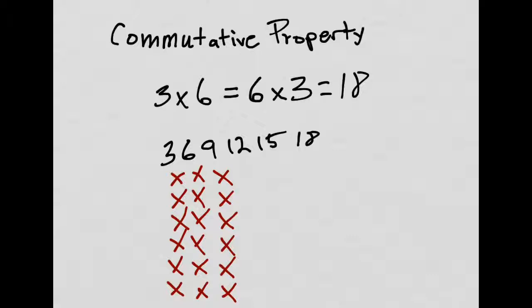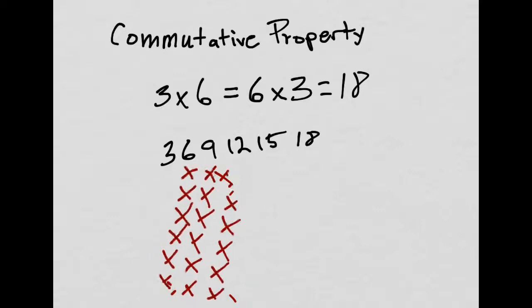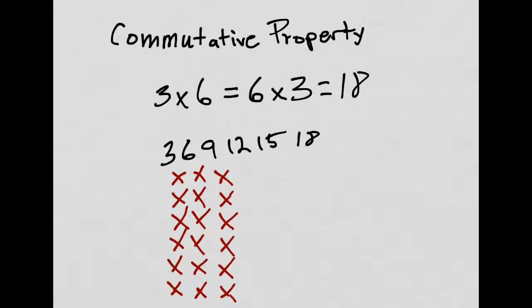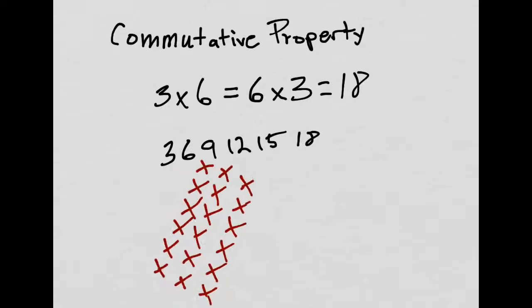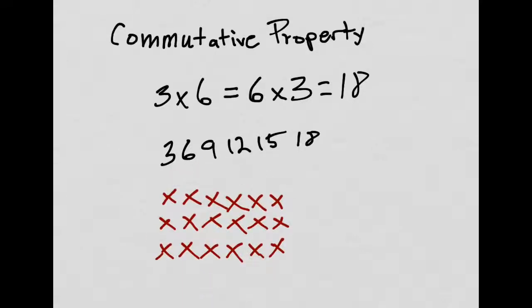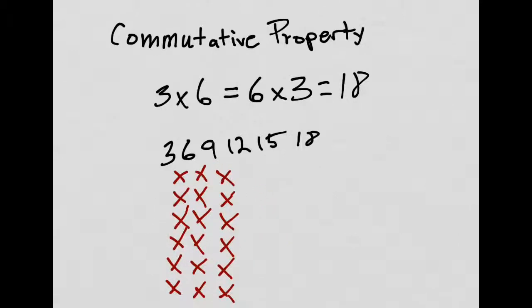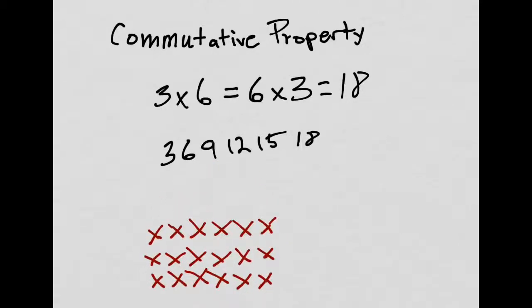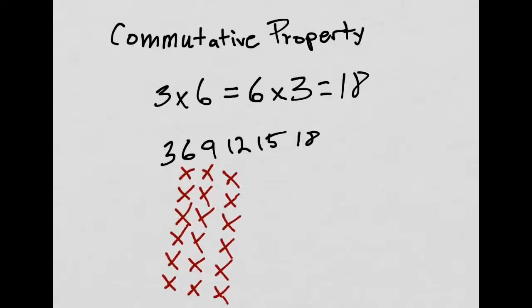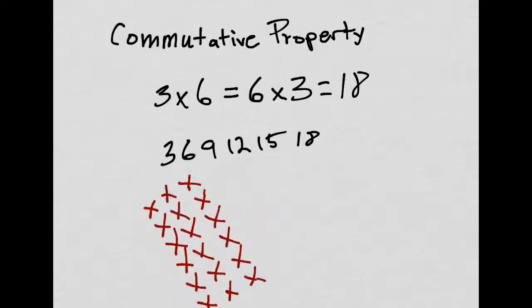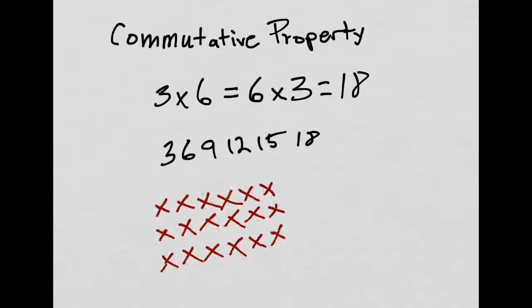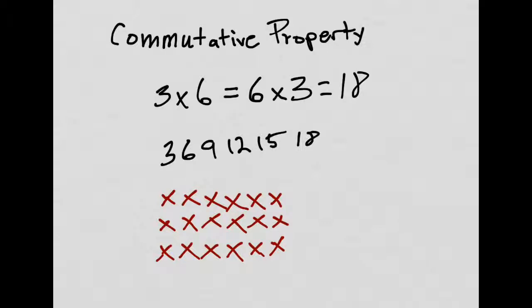So, it's easy to see that if 3 times 6 is 18, that 6 times 3 will be the same. Let me do that one more time. 3 times 6, 6 times 3. 3 times 6, 6 times 3. No matter how I rotate this array, it always has 18 in it. And that's the commutative property in a nutshell.